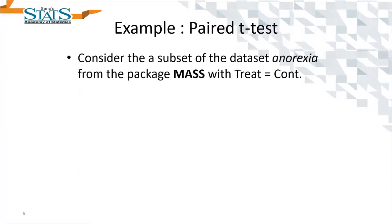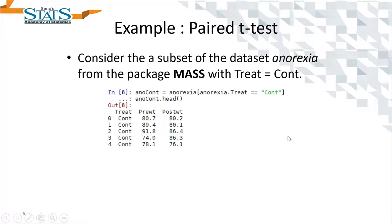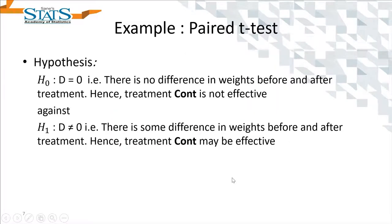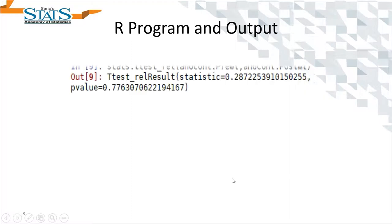As an example, let's take the anorexia dataset from the R package called MASS. I have subsetted this dataset with the condition treat equal to 'cont', and here we are going to see whether pre-weight equals post-weight or not — in other words, whether the pairwise difference is equal to 0 versus it is not equal to 0.